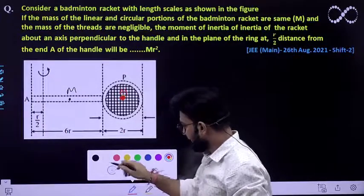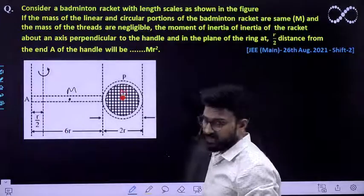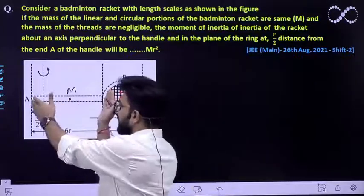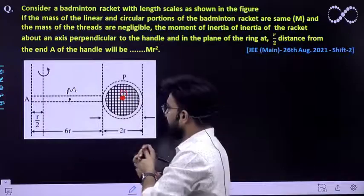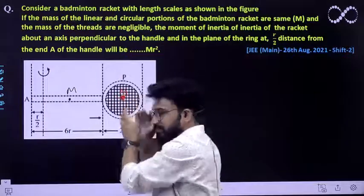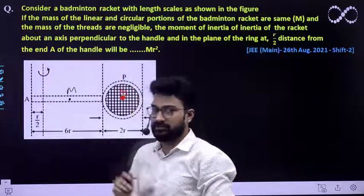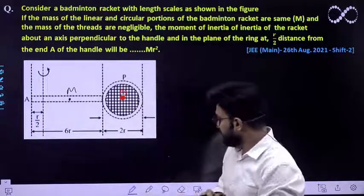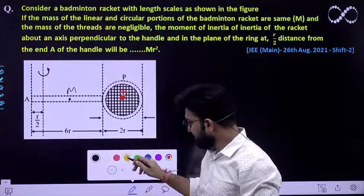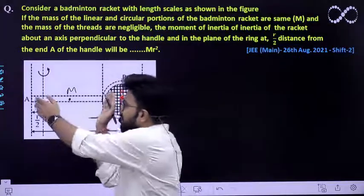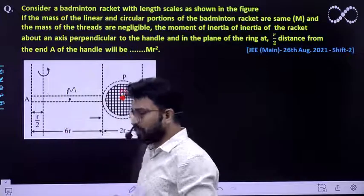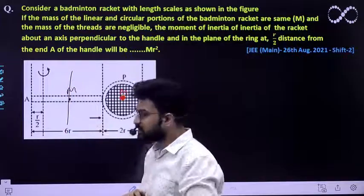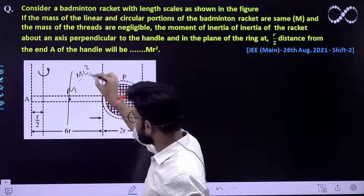So you can easily find out the moment of inertia of this whole racket. First of all, you have to find the moment of inertia of the linear part about this axis. You will be using the parallel axis theorem for that. We know that the moment of inertia of this linear portion at its centre of mass is given by ML²/12.